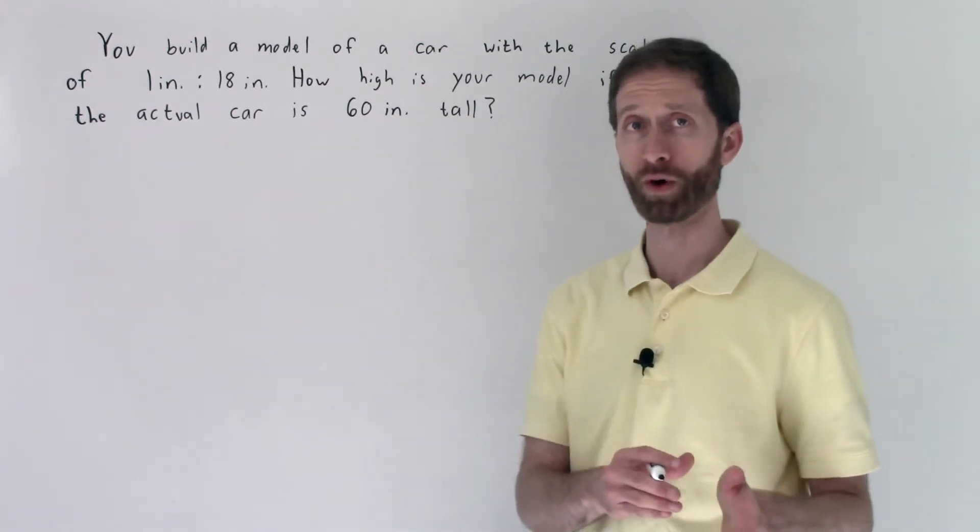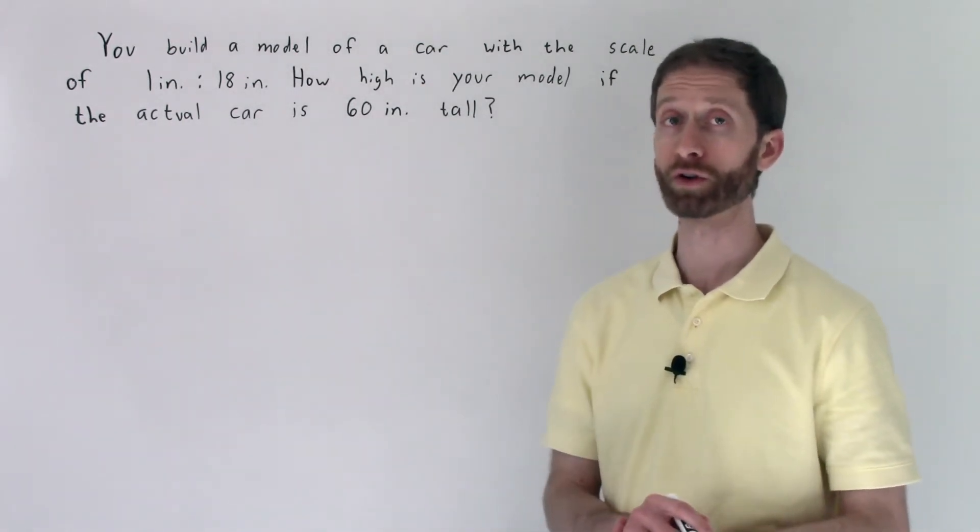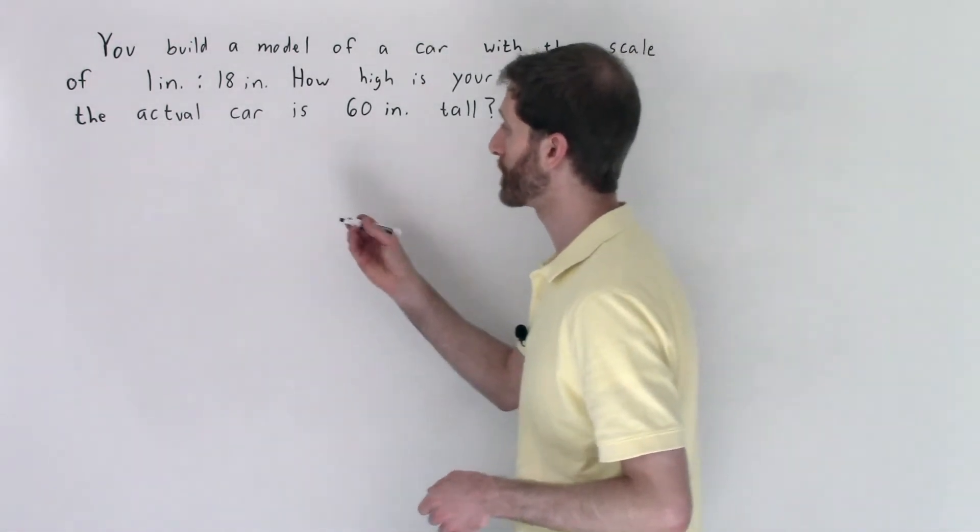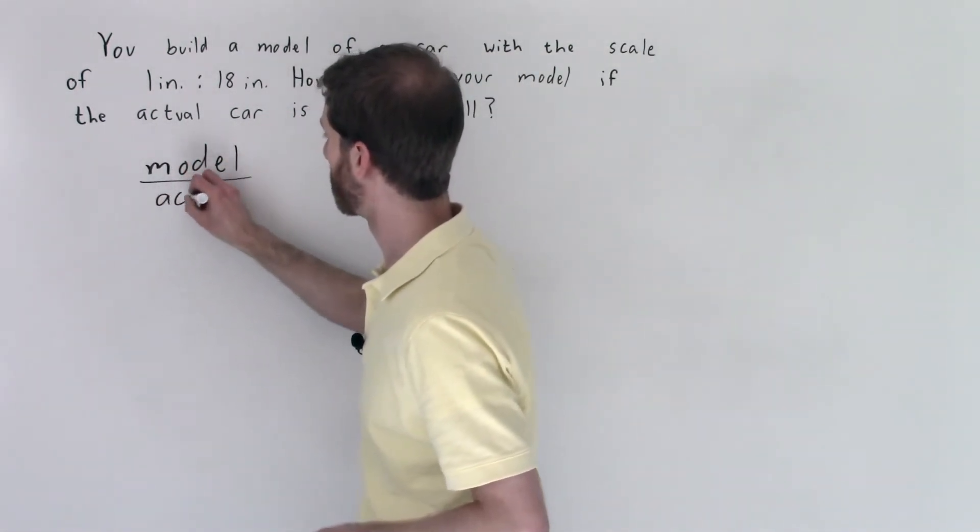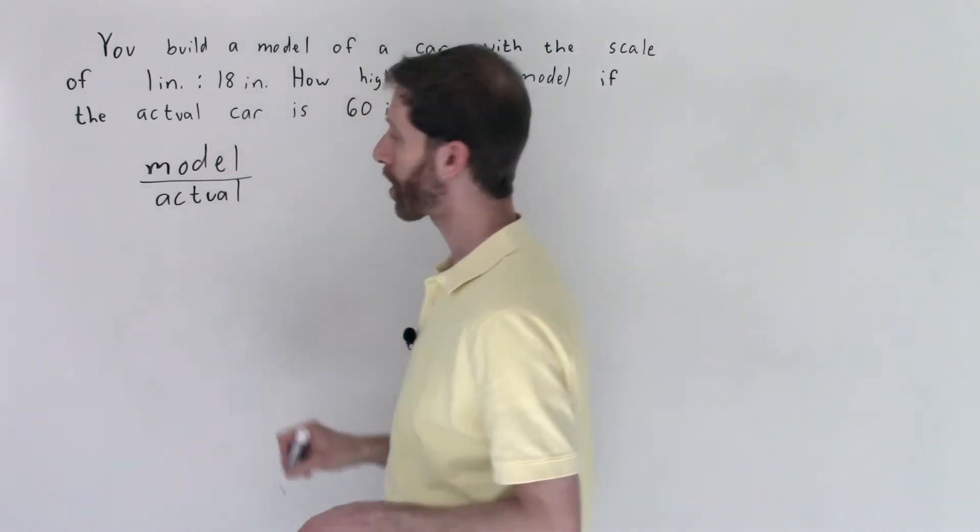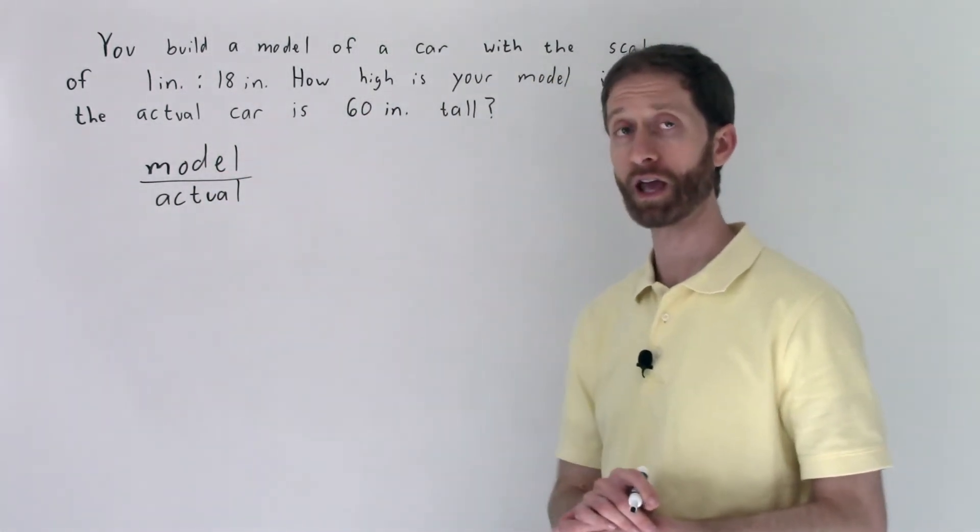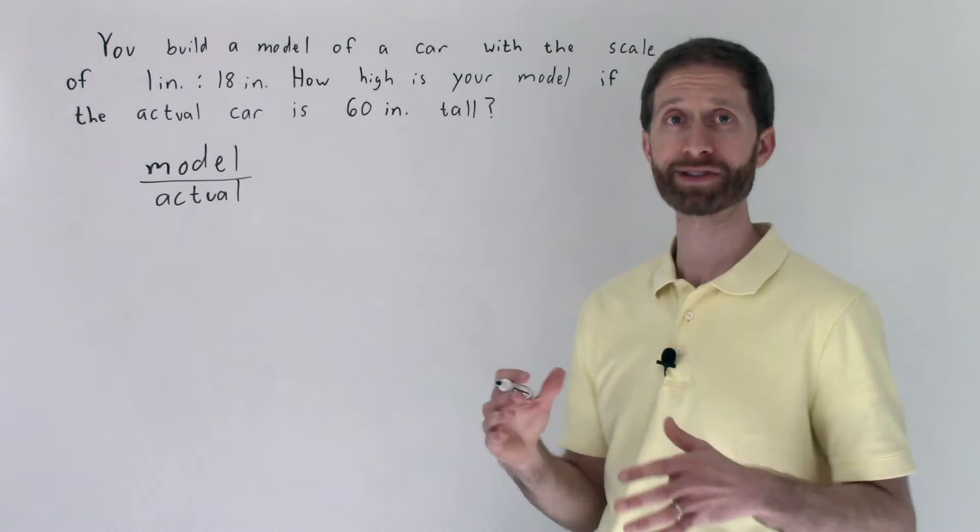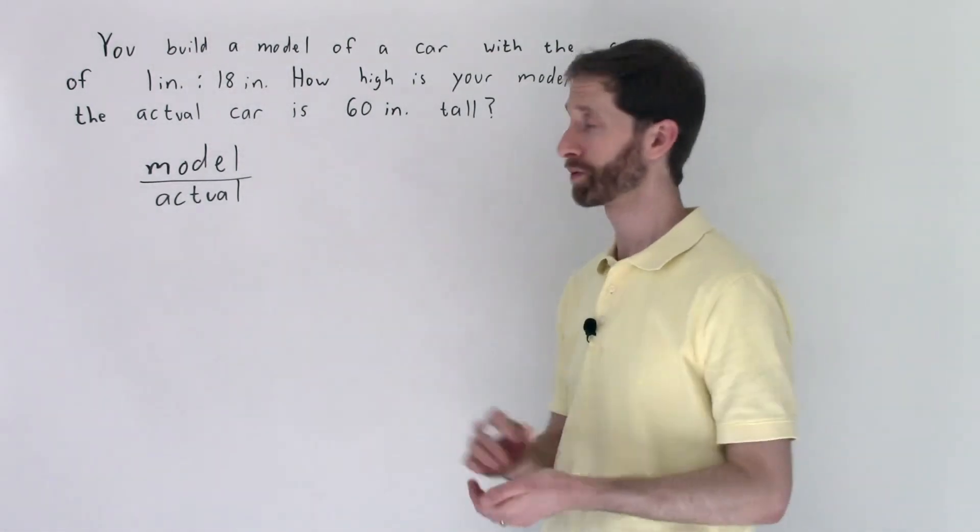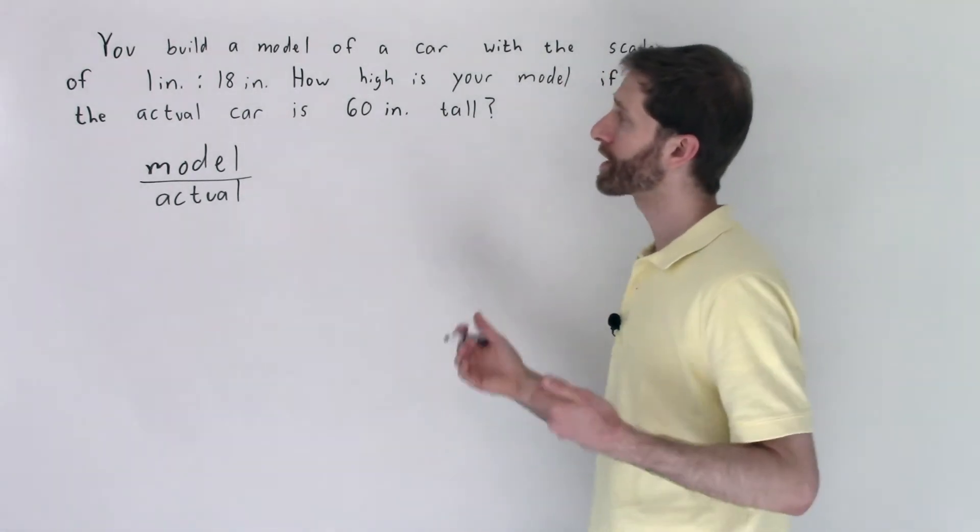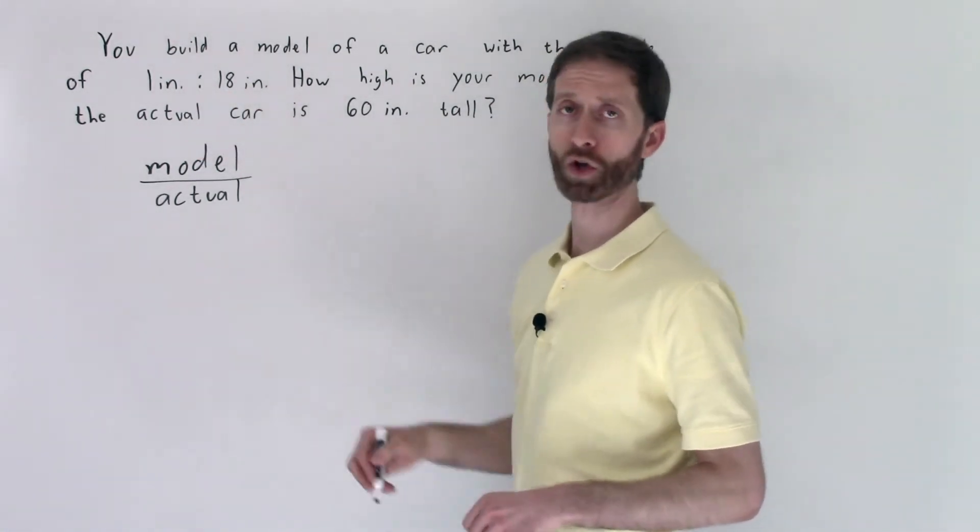This is similar to that map word problem or word problems that we went over earlier in the video in that we are going to be comparing the model to the actual. It's always model to actual when we talk scales. You can do actual to model, but just as a convention, meaning just so that we have a standard way of approaching it, we'll keep it as model to actual.